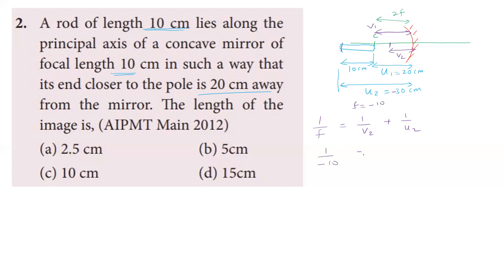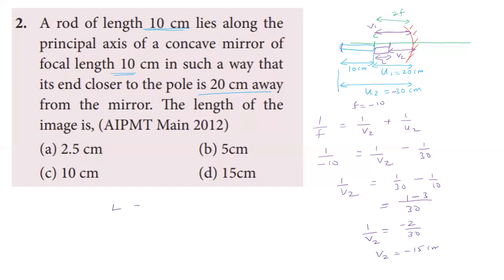Using the mirror formula, 1/v₂ minus 1/u₂. LC is 30, giving minus 2 by 30. So 1/V₂ equals minus 2/30, meaning V₂ equals minus 15 cm. The length of the image equals V₁ minus V₂. V₁ is 20 cm and V₂ is 15 cm, so 20 minus 15 equals 5 cm. The length of the image formed is 5 cm. Second option is correct.